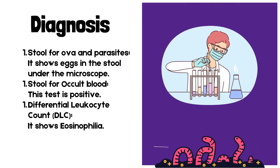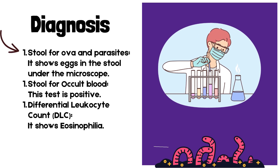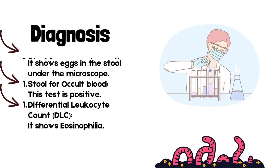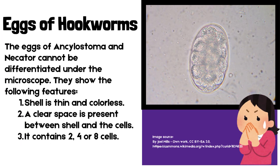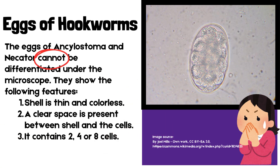Diagnosis: The following lab tests diagnose this infection. Stool for ova and parasites — it shows eggs in the stool under the microscope. Stool for occult blood — this test is positive due to chronic blood loss. Differential leukocyte count (DLC) — it shows eosinophilia. The eggs of Ancylostoma and Necator cannot be differentiated under the microscope.